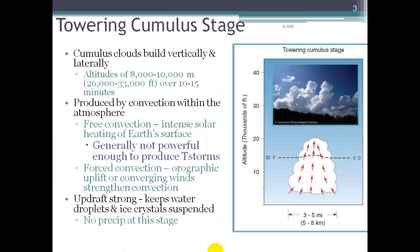Let's take a look at each of these stages in more detail, beginning with the towering cumulus stage. All clouds develop from uplifting air that reaches its condensation point — the dew point — and cumulus clouds form from convection updrafts. So if we have vigorous updrafts, we're going to get larger cumulus clouds. The altitudes we're talking about here are 26,000 to 33,000 feet, and they can develop very rapidly — 10 to 15 minutes — so you can literally watch these things grow.